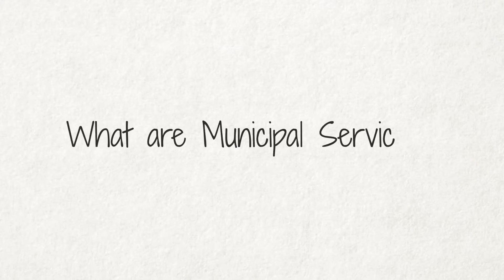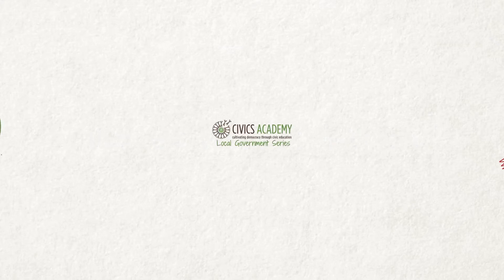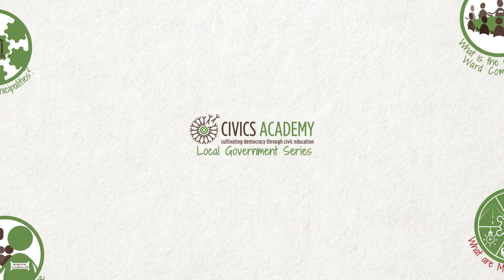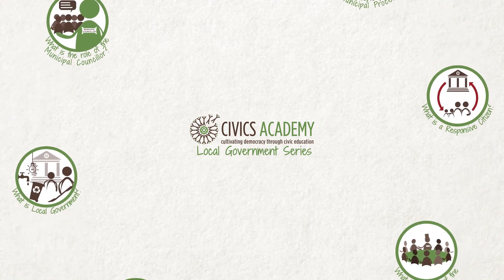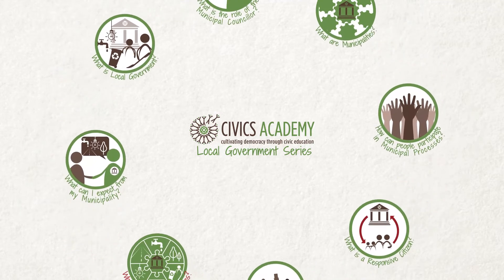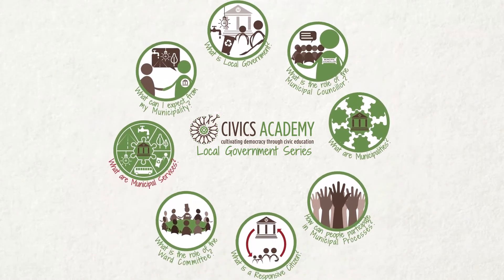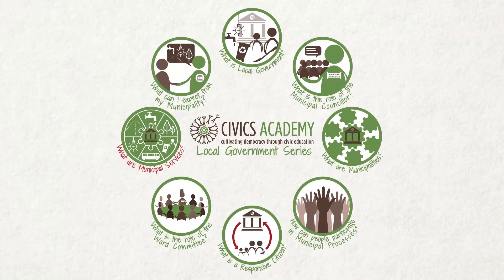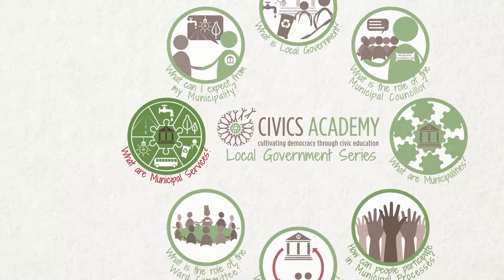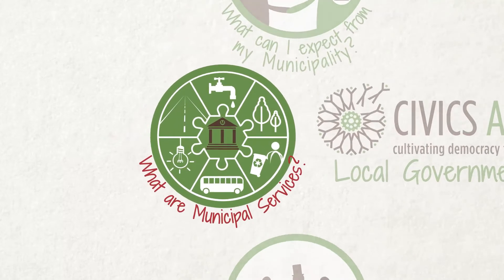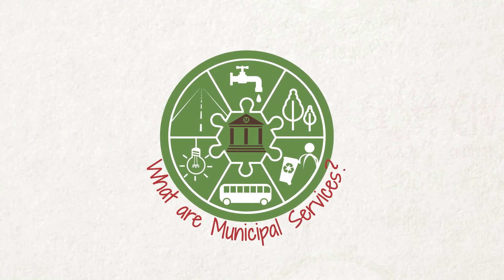Welcome to the Civics Academy Local Government Series. These videos explain how local government functions. In order to be responsible citizens and shape the country we want, we need to know how government functions and how we can engage it. This video explains what services municipalities must provide, where municipalities get the money to provide these services, how they spend their funds, and why it is so important that people pay for municipal services.